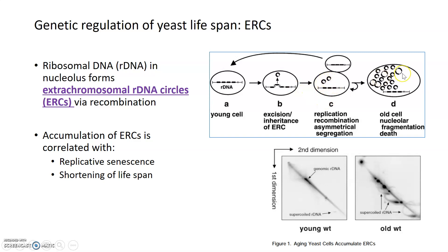ERCs accumulate over time, so an older yeast cell will have a larger accumulation of ERCs than a young cell, because the chances of excision and ERC formation via recombination increase over time. ERC accumulation is not only correlated with yeast cell age but also with replicative senescence — the stopping of replication — and with a shortening of lifespan. If you take isolated ERCs and introduce them into a young yeast cell, you can immediately shorten its lifespan, likely through fragmentation of the nucleolus.